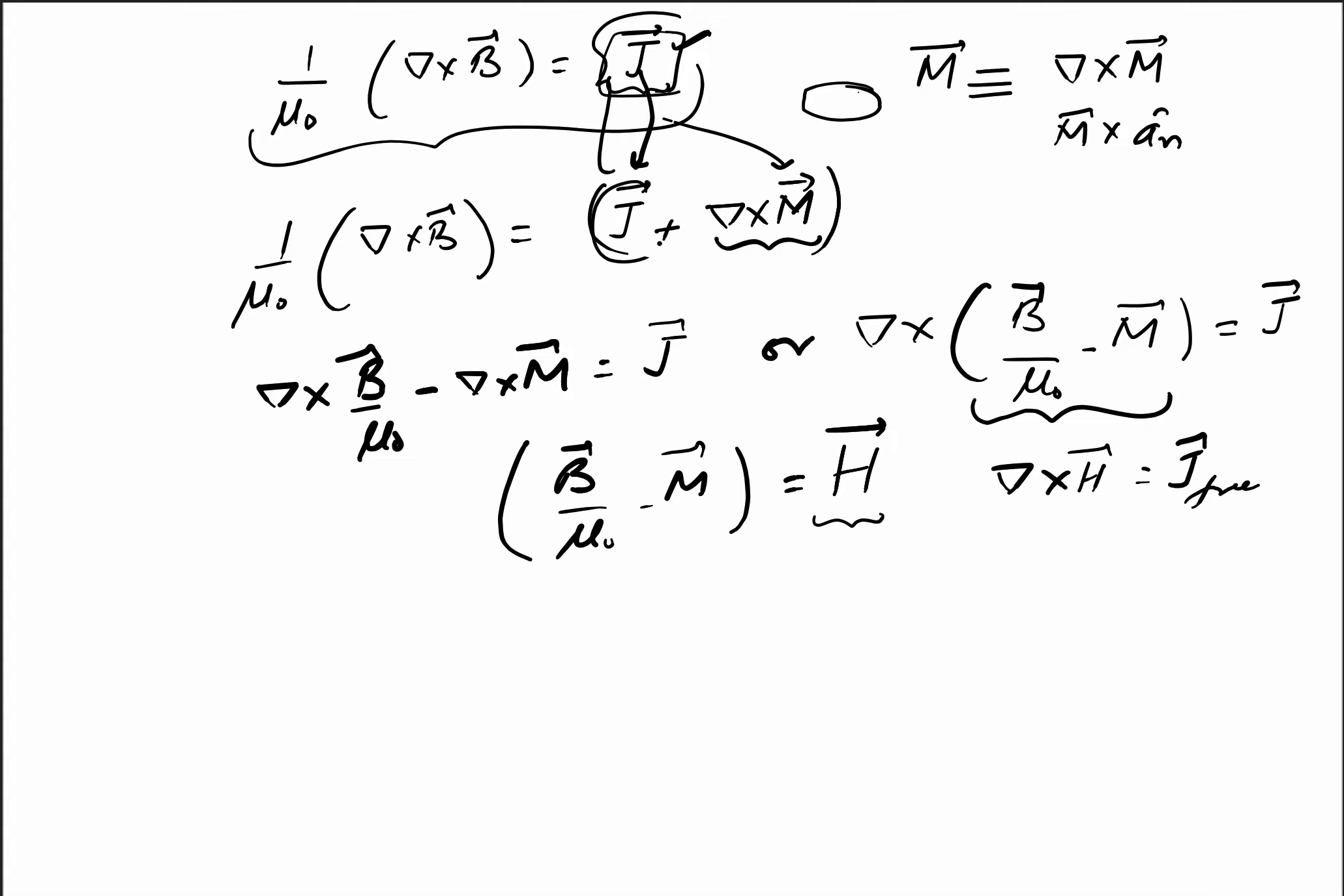This J is just the free current density, similar to the electrostatic case where ∇·D = ρ_free. Some physics books, like Feynman's lectures, define H = B - μ₀M. There can be different definitions, but in electrical engineering, especially for designing magnetic machines like transformers, we typically use this definition of magnetic field intensity H.